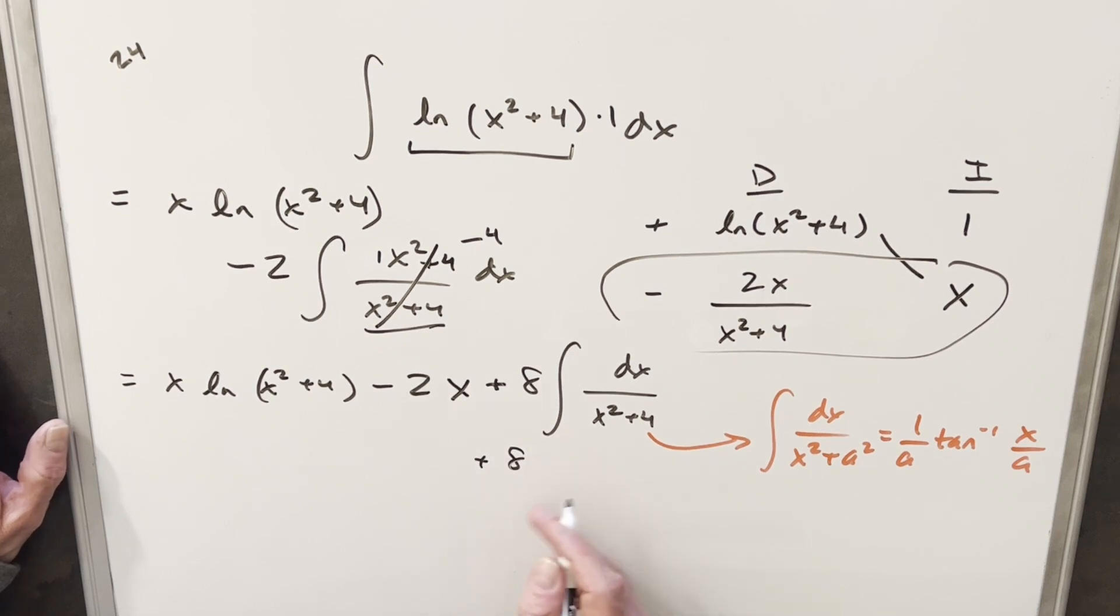So we're going to have the 8 out front. Now what we can do is write this 4 as 2 squared, so that our a value is going to be 2. So just matching with this, we're going to end up here with 1 over a, or 1 over 2, arctan of x over 2.